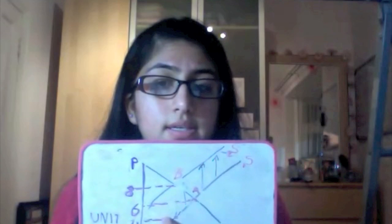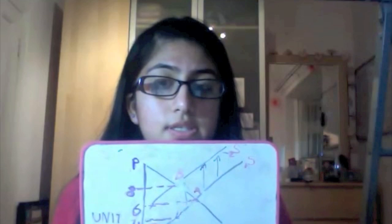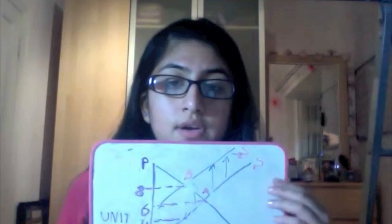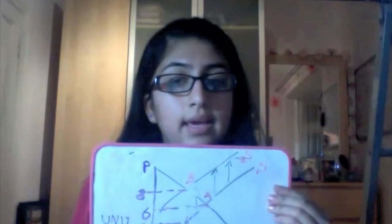So in this instance, producer incidence and consumer incidence is exactly the same. They are half and half. But this is not always the case. They can be different.